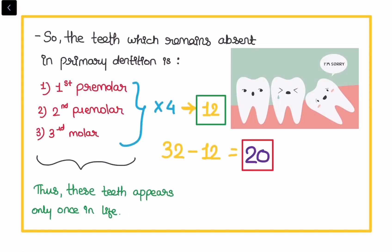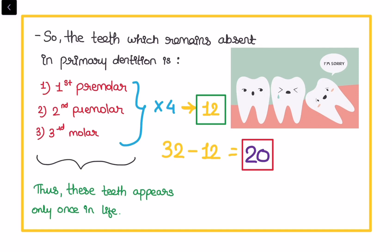As we discussed the primary and the secondary dentition, now we will be studying the teeth which remain absent in the primary dentition. These teeth will be first premolar, second premolar and third molar. The upper right and left lateral half and the lower right and left lateral half will make the total of 3 into 4, that is 12 teeth that will be absent in the primary dentition. Yes, these teeth will be absent in the primary dentition and thus these teeth appear only once in life after the secondary dentition. Let's differentiate: there are 32 teeth in the secondary dentition minus the 12 teeth that are absent in the primary dentition. The answer will be 20 teeth that are present in the primary dentition.